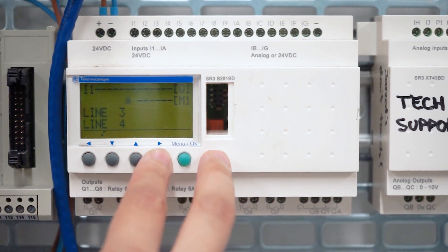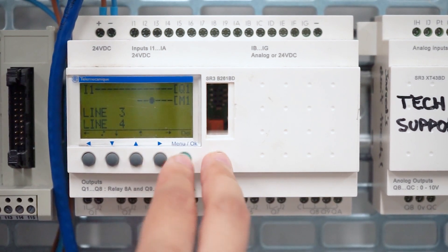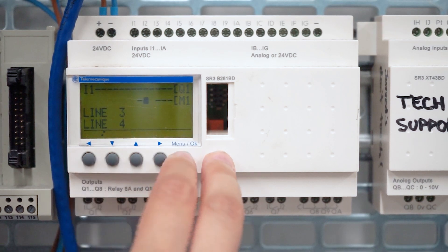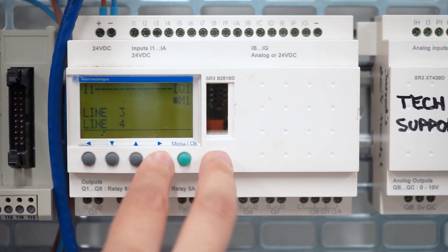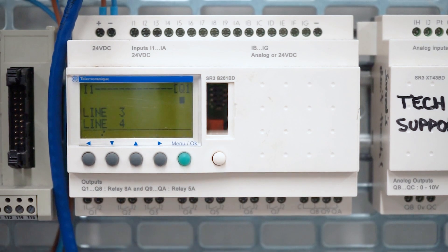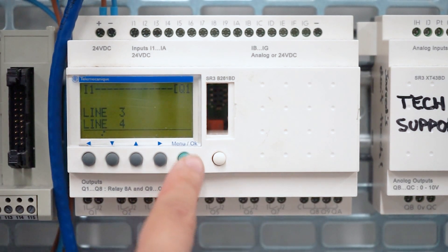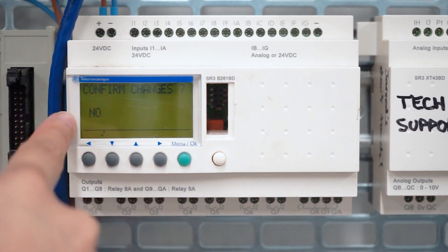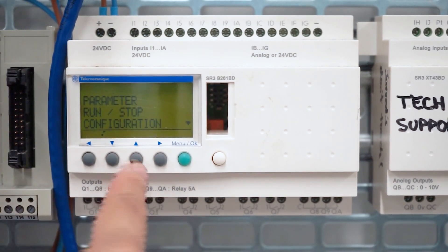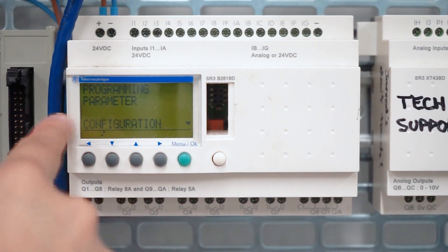As you can see, just keep going over and deleting what you don't want, and that's the basics of programming a Zelio relay. So we're going to press menu ok to confirm the changes, press again for yes, and we can now run this program.